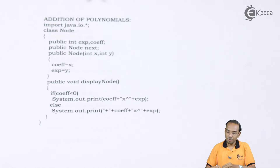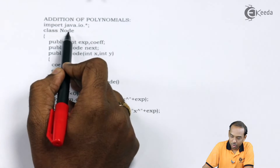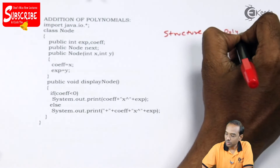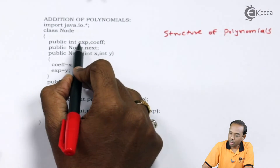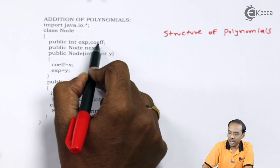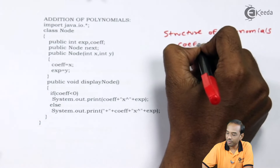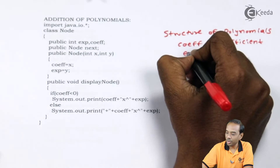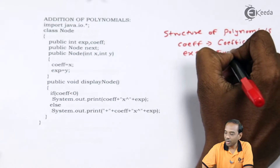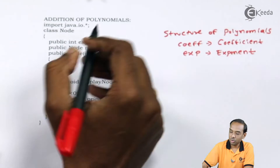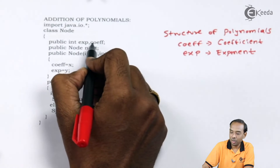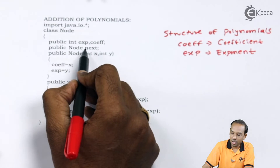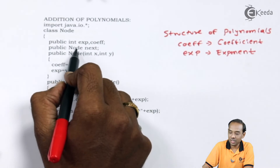We have defined a class called Node. Since we are dealing with polynomials, we will discuss the structure of polynomials. We are going to have two variables: `coeff` and `exp`. The variable `exp` is going to give me the exponent part of the polynomial, and `coeff` is going to give me the coefficient part of the polynomial.